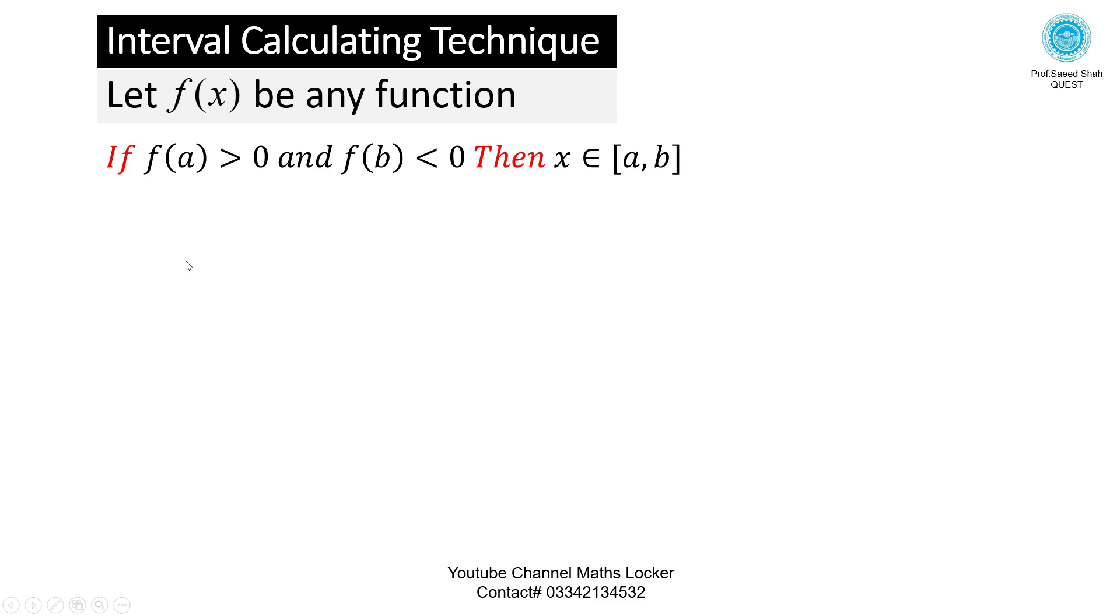Or you can check x in [a, b]. Here is a graph: the height f(a) is greater than 0 above the x-axis means positive. f(b) is less than 0 means negative below the x-axis. At the point a, the height is f(a) below the x-axis. At the point b, the height is f(b) above the x-axis. Joining these, here is the Root.